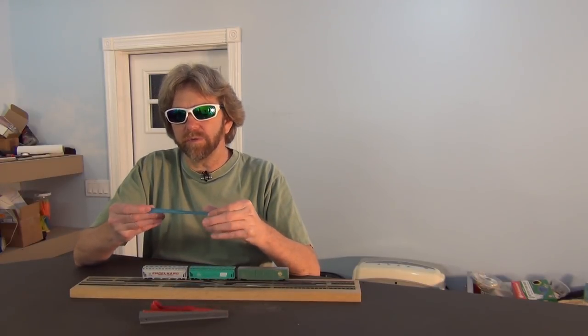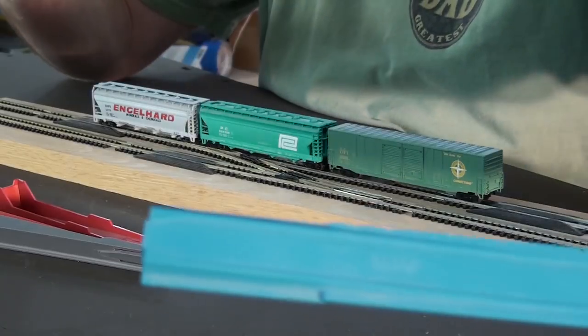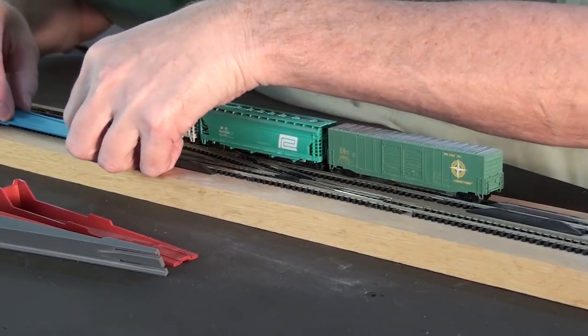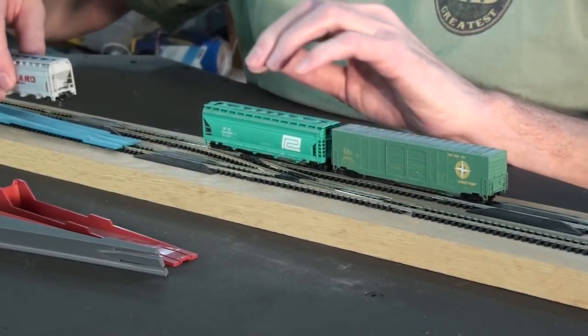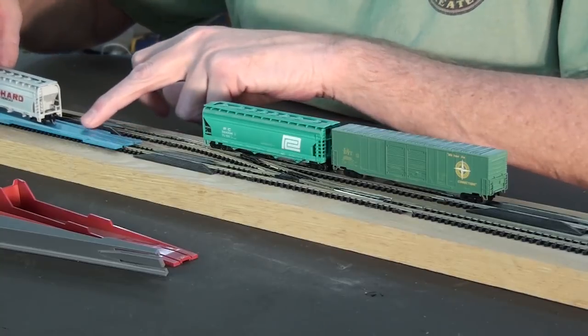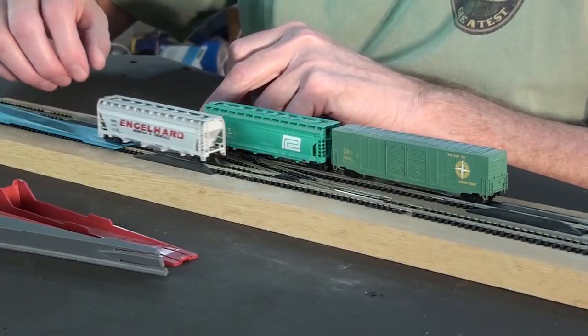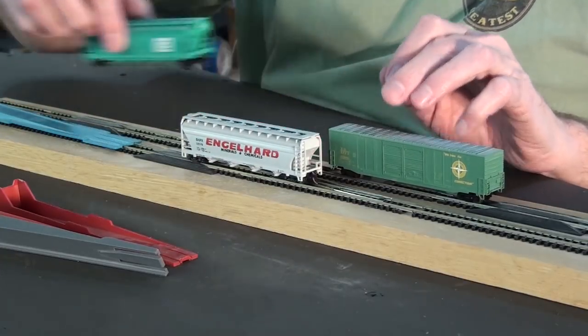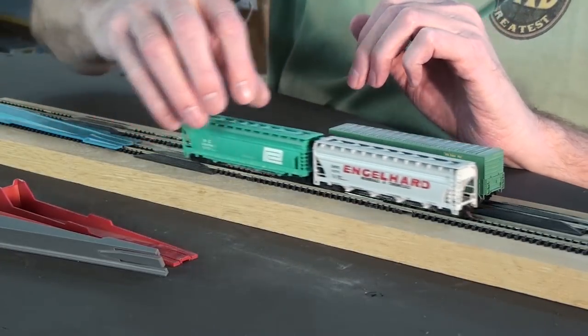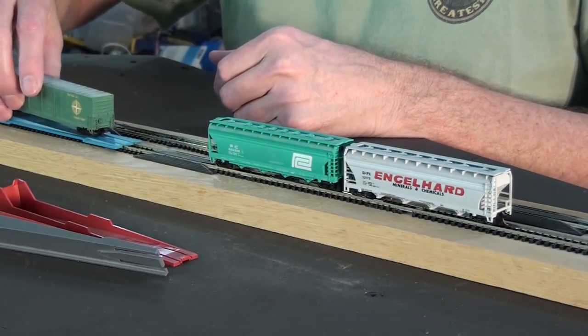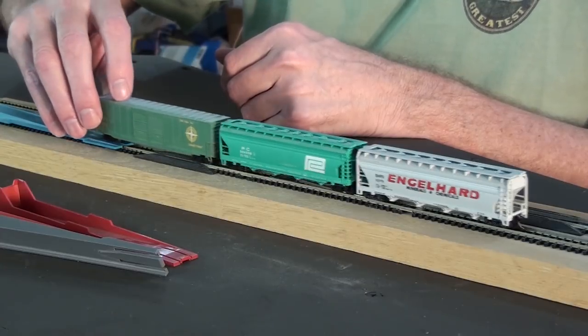So one of the easiest ones to use is the one by Kato. It's a low profile ramp. You just set it down, push it down on the track. What I like to do is it's got a wide groove where the car can sit in. I kind of push it to one side and it just rides on down just like that. Very easy to use, simple to use.